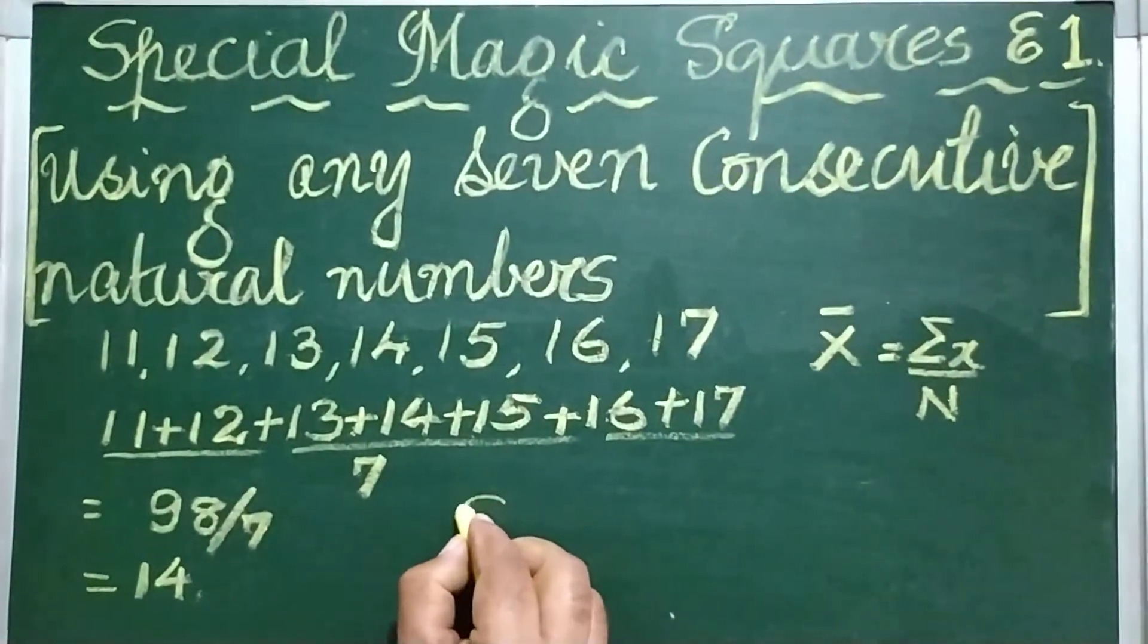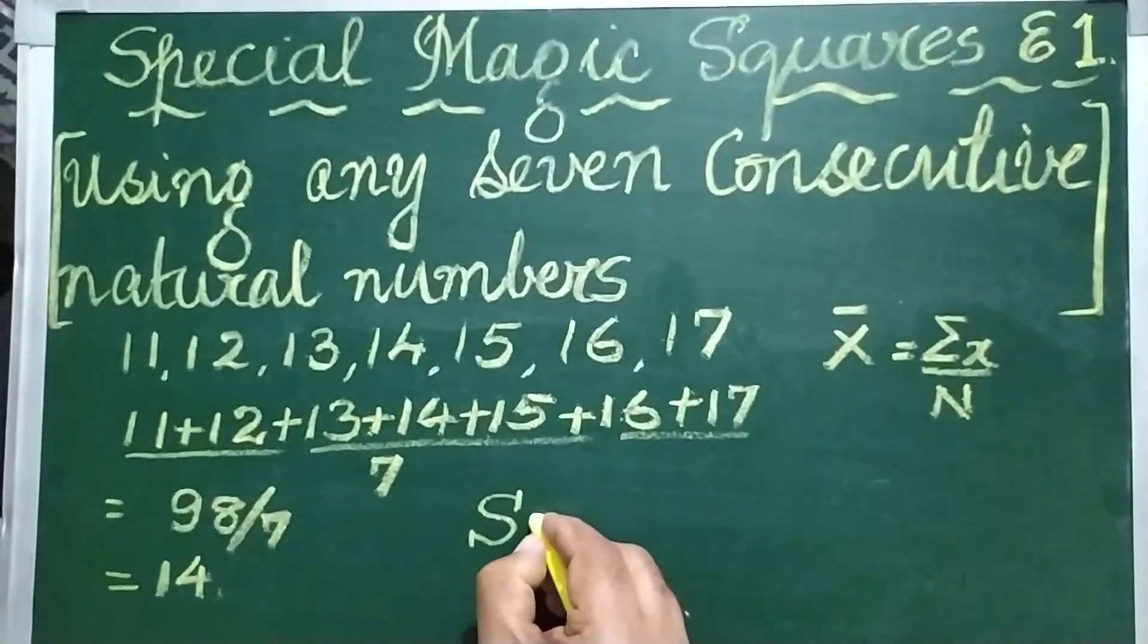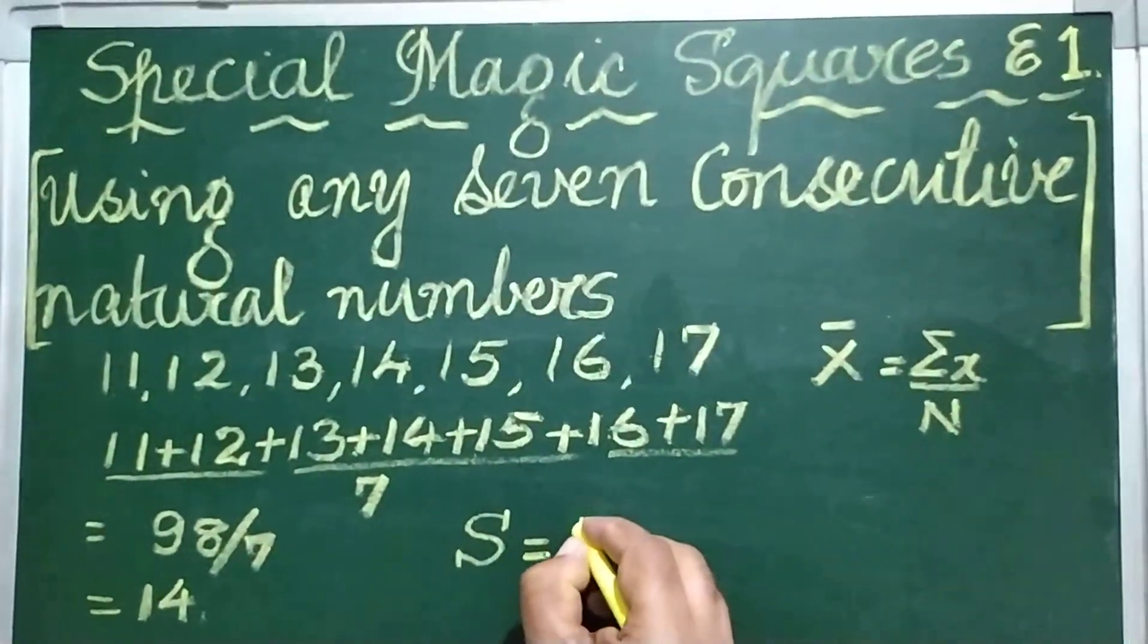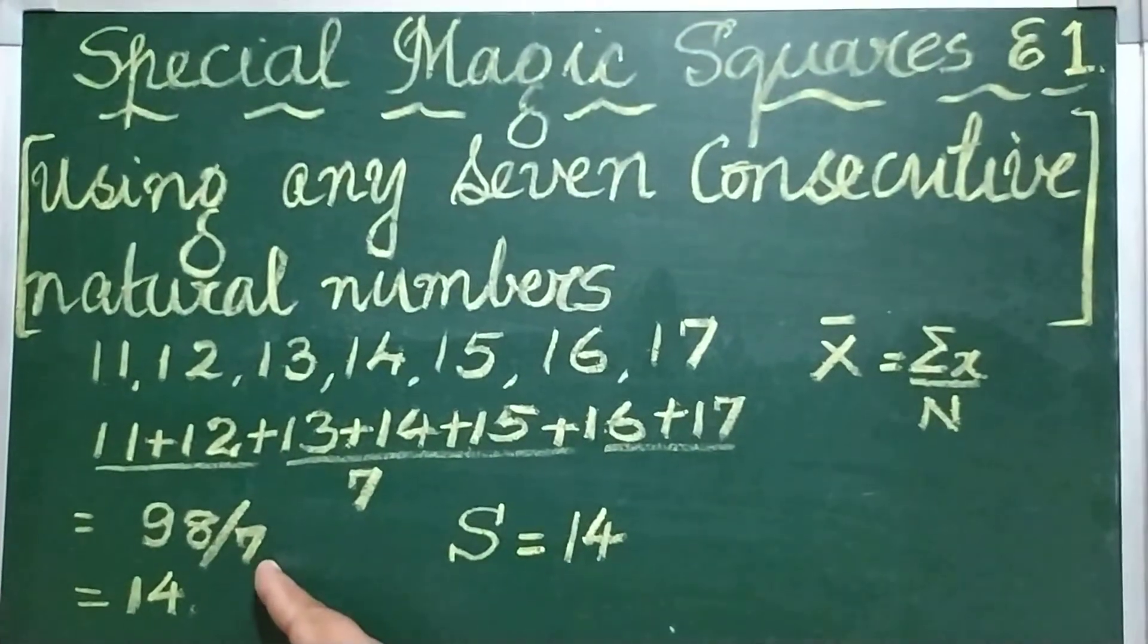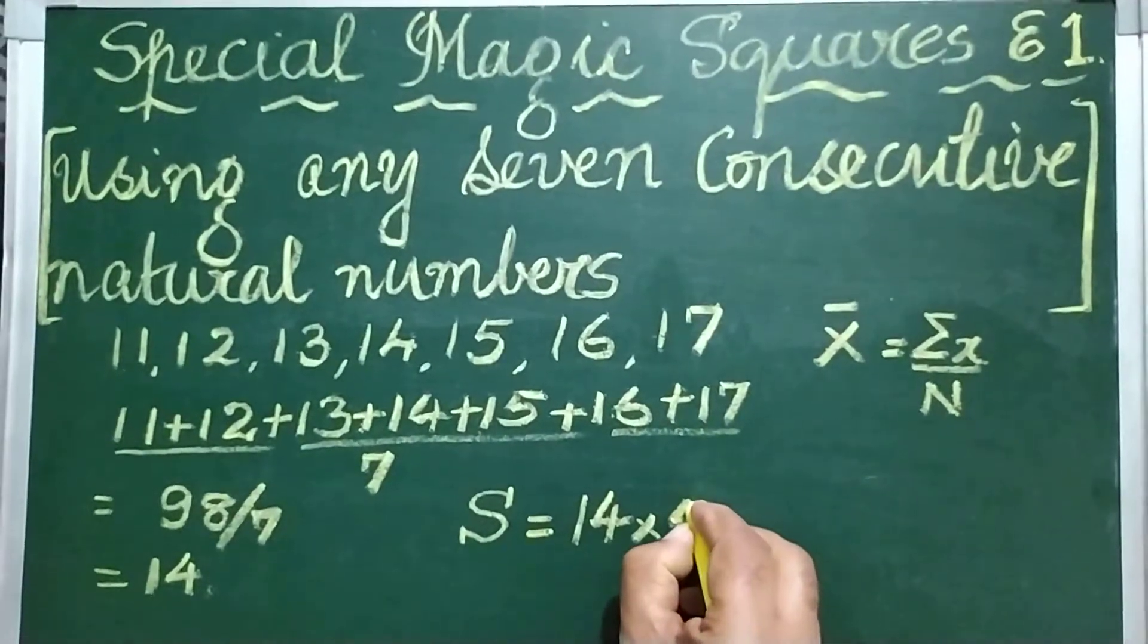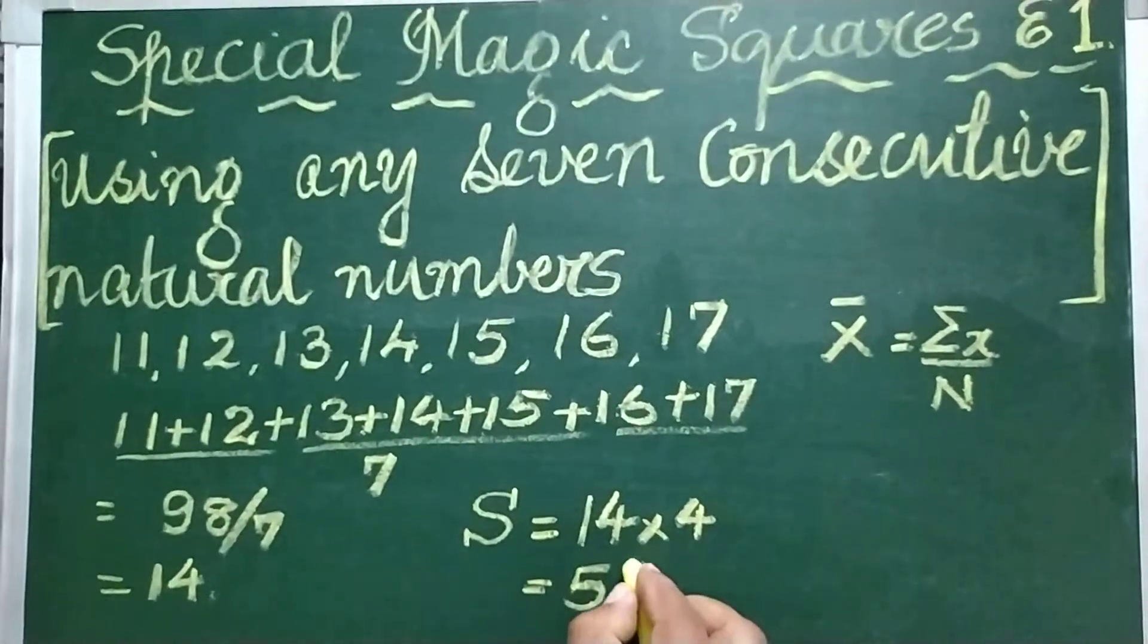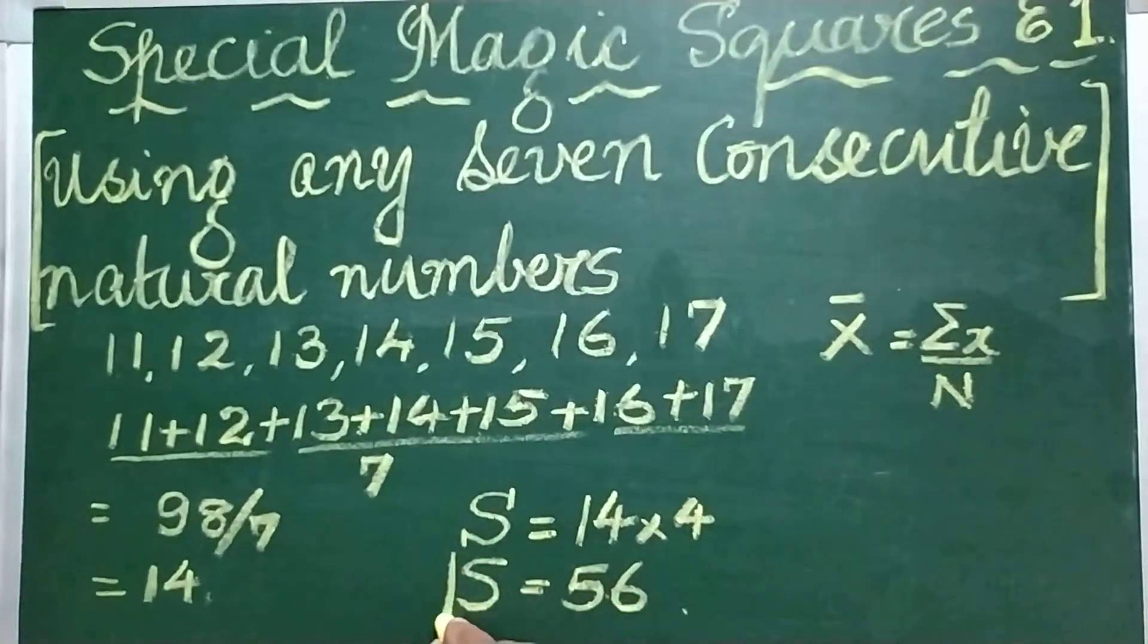The magic sum of the special magic square that I am constructing today will be 14, the average that I got, multiplied by the number of rows, which is 4, or number of columns, which is also 4. That should be equal to 56. So, the magic sum should be equal to 56.